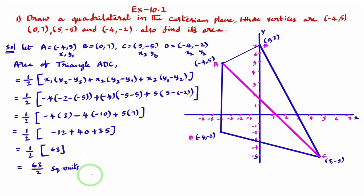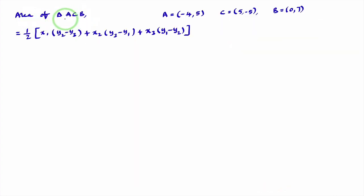Now, area of triangle ADC is over. Now, I'll calculate area of triangle ACB. Area of triangle ACB. I'll consider A as X1, Y1, C as X2, Y2, B as X3, Y3. I'll substitute these values in area of triangle formula.